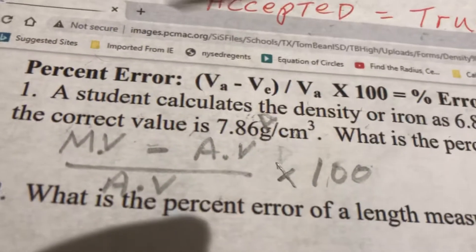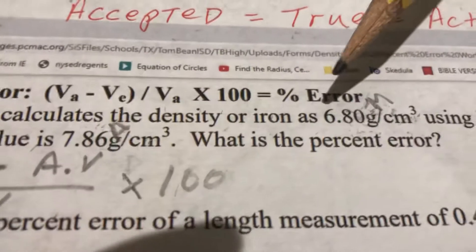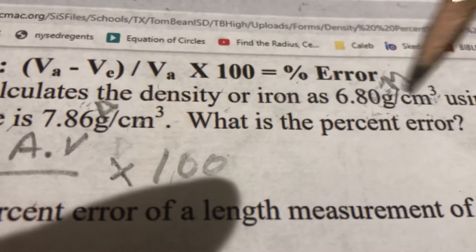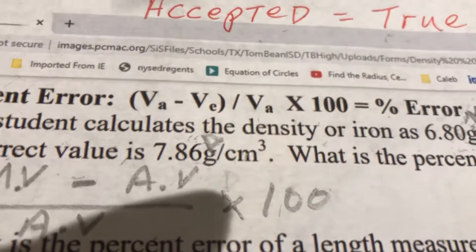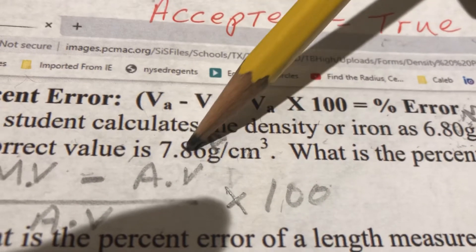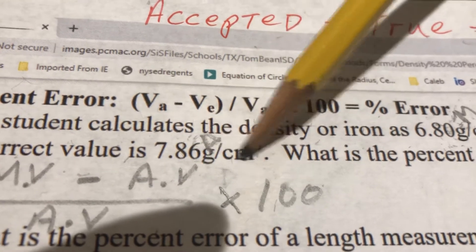So what's the situation? Student does the experiment. They find the density of iron to be 6.80. The professor looks in the handbook or the student goes afterwards and looked in the handbook, have they handed their lab in? It's 7.86, grams per centimeter cubed.